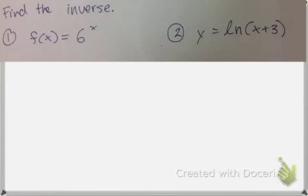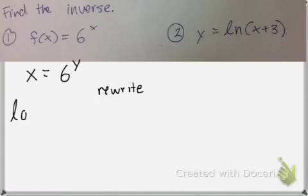So let's look at example one. This is an exponential function. I know that my inverse is going to be a logarithmic function. But let's start by switching x and y. Now, the only way I can solve for y is to rewrite my equation as a logarithmic function.